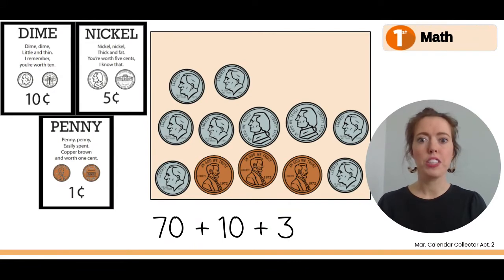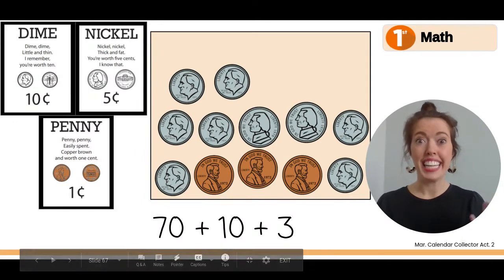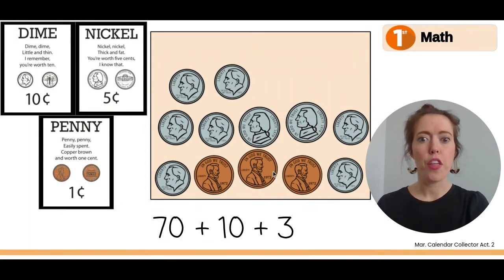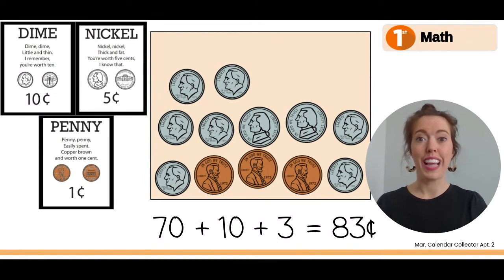Now let's find out how much this is worth all together. What is seventy plus ten more? Seventy plus ten is eighty. What about three more? Eighty-three. This is eighty-three cents all together.